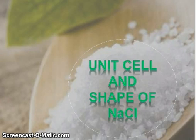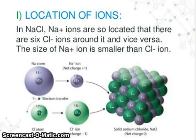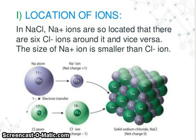Unit cell in the shape of sodium chloride. The location of ions: in sodium chloride, sodium ions are so located that there are six chloride ions around it, and vice versa. The size of sodium ion is smaller than chloride ion. The sodium atom becomes the sodium plus ion with a net charge of plus one, and its size becomes reduced. In the case of chlorine, it gains one electron, net charge minus one, and size becomes increased.